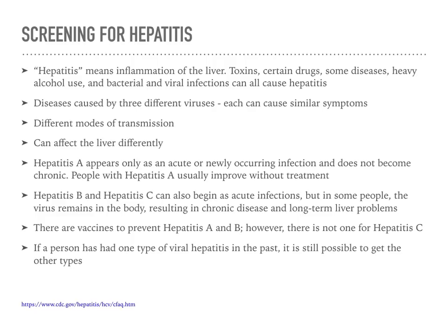When screening for hepatitis, remember there are different causes — alcohol abuse, different diseases, bacterial and viral infections — with different modes of transmission, and they affect the liver differently. There are vaccines for both hepatitis A and hepatitis B, but not for others. Hepatitis B and C can both begin as acute infections, but in some people the virus results in chronic disease over a longer period of time with long-term liver problems.